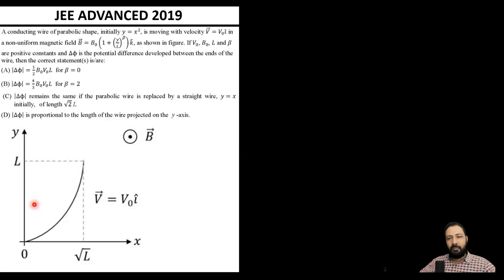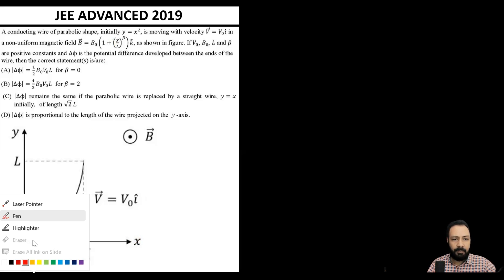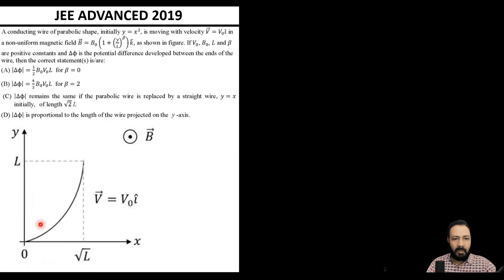Hello dear friends, welcome to the Quantum Guru. Let's look at this question on electromagnetic induction from JEE Advanced 2019. There is a conducting wire in a parabolic shape — its equation is y = x².